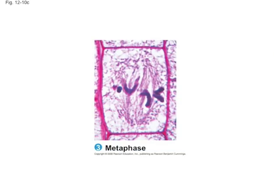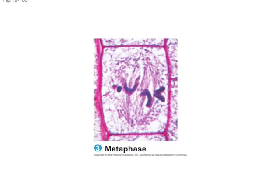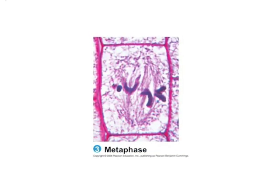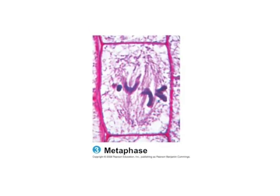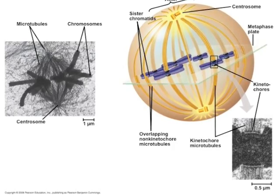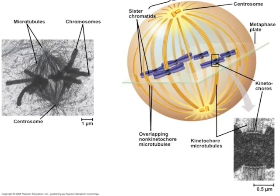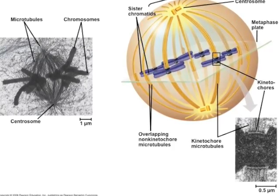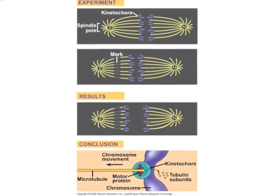In metaphase, the spindle forms and the chromosomes line up on the metaphase plate in the middle of the cell, where a spindle microtubule attaches to the kinetochores.